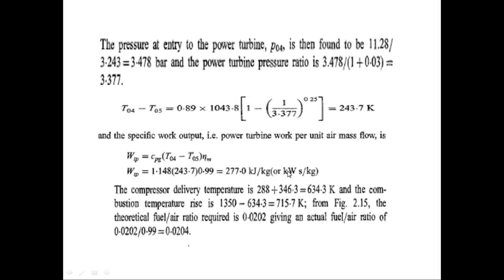The compressor delivery temperature is T_02 = T_01 + 346.3 = 288 + 346.3 = 634.3 K. The combustion temperature rise in the combustion chamber is the maximum cycle temperature minus T_02: 1350 minus 634.3 = 715.7 Kelvin.